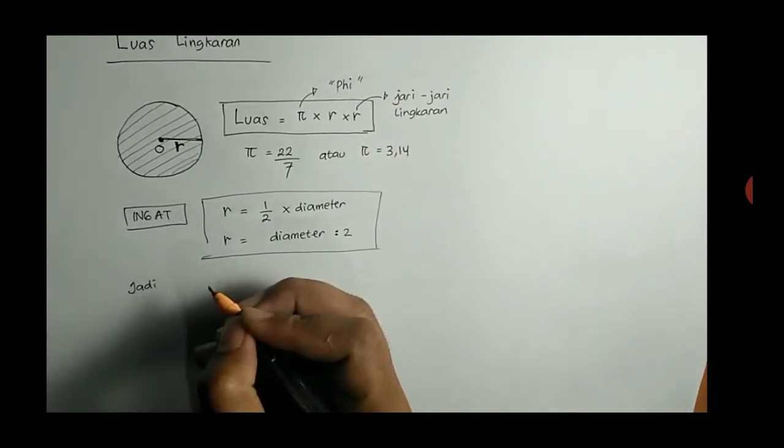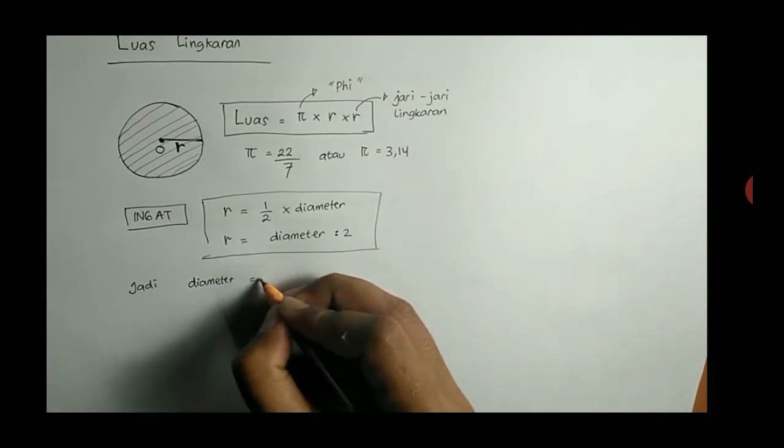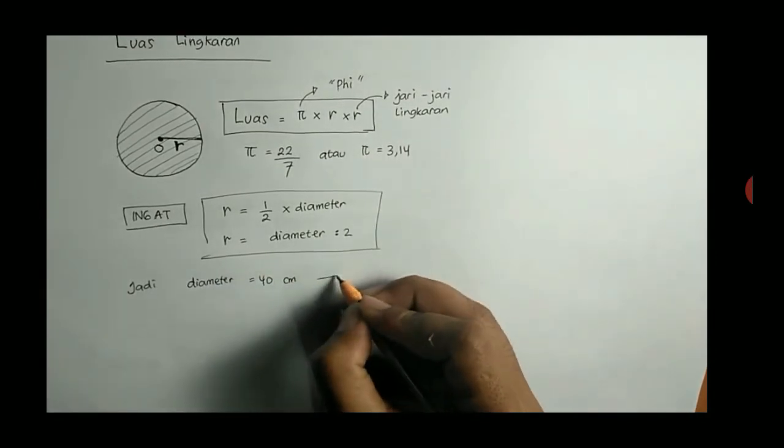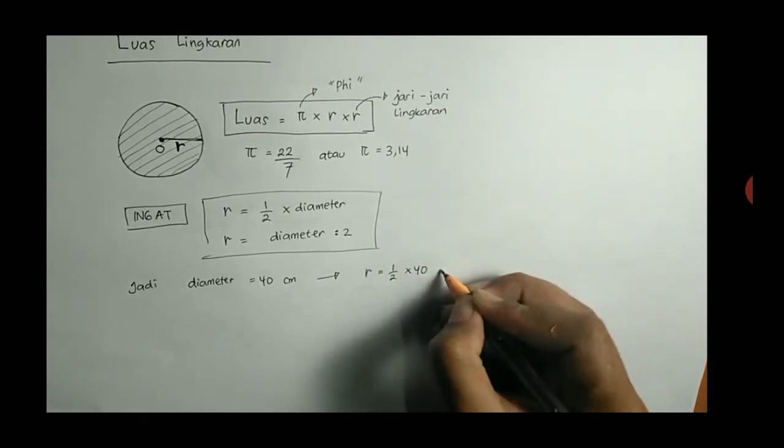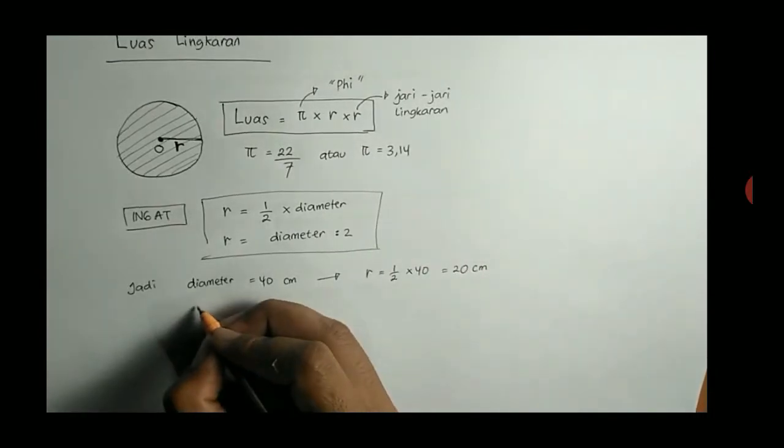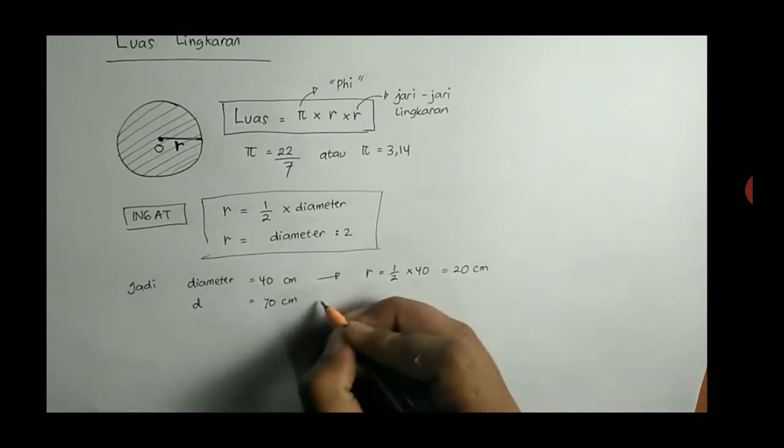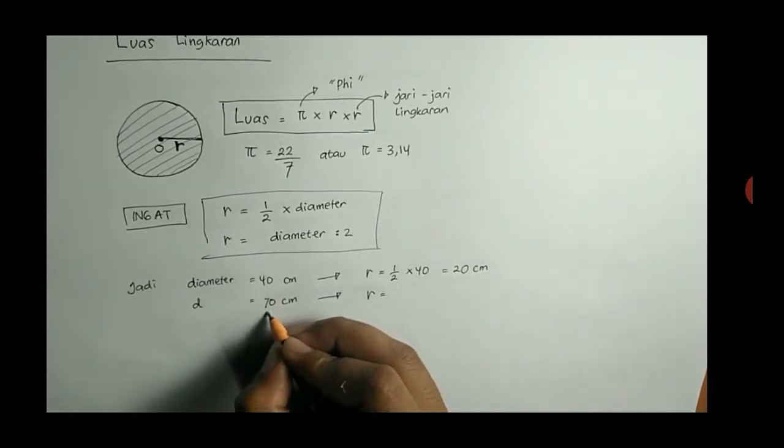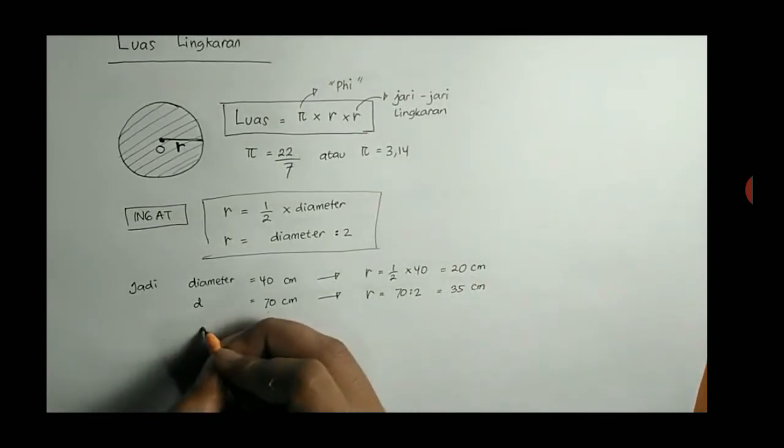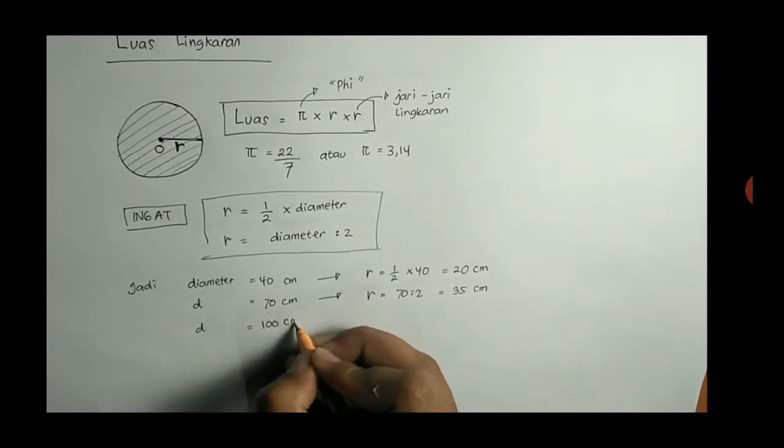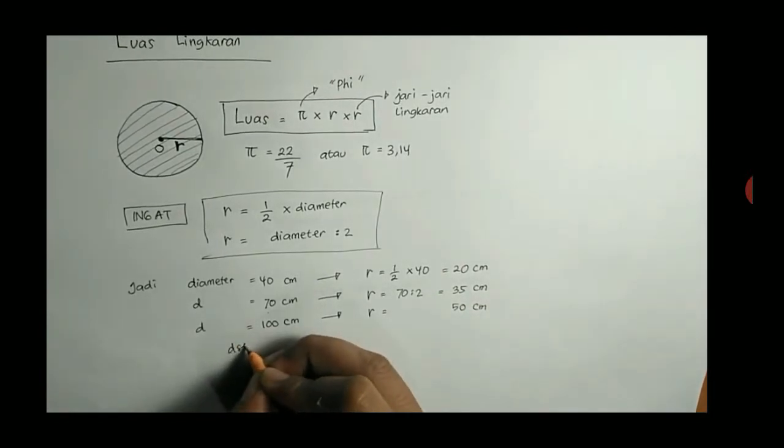Jadi misalkan, kalau misalkan diameter lingkaran itu 40 cm, maka R-nya adalah setengahnya 40 atau 40 bagi 2. Setengah dikali 40, berarti setengahnya 40 itu 20 cm. Kalau misalkan diameternya 70 cm, berarti R-nya adalah 70 bagi 2, berarti 35. Dan seterusnya. Kalau D-nya 100, R-nya ya 50. Dibagi 2 saja.